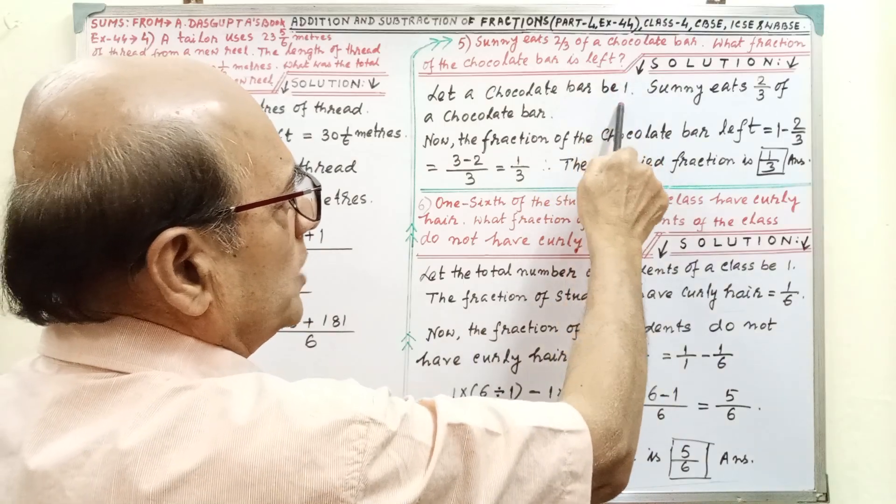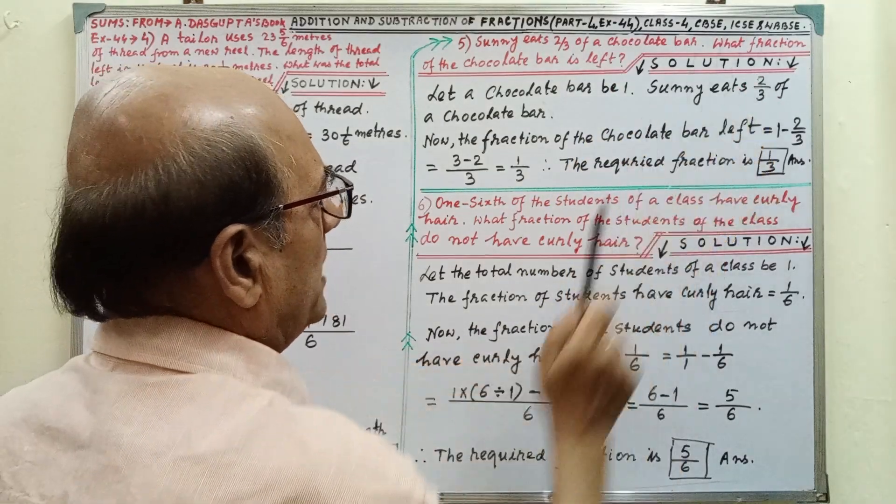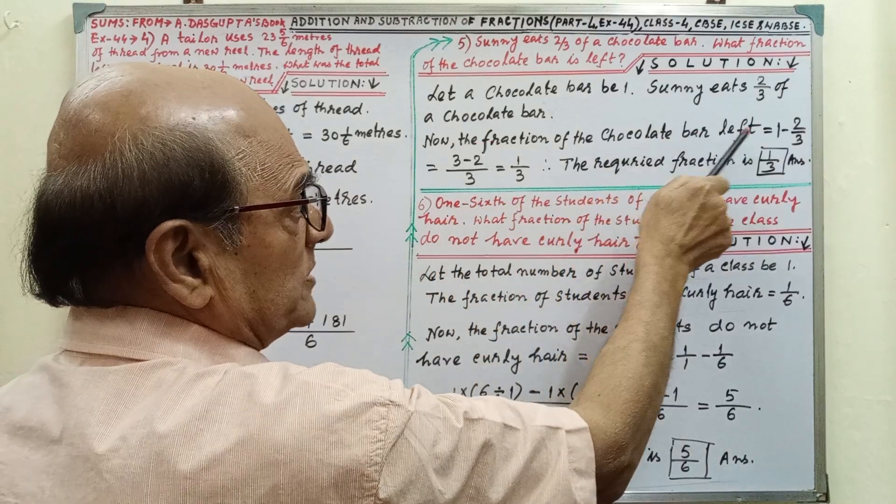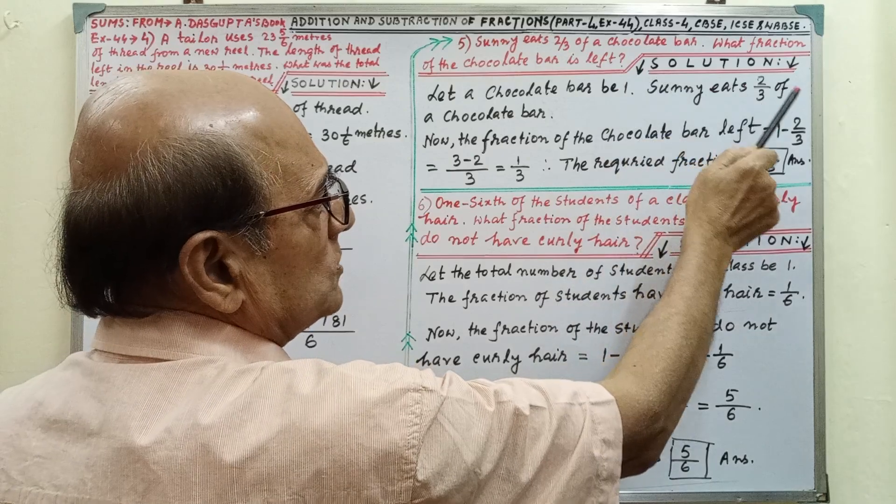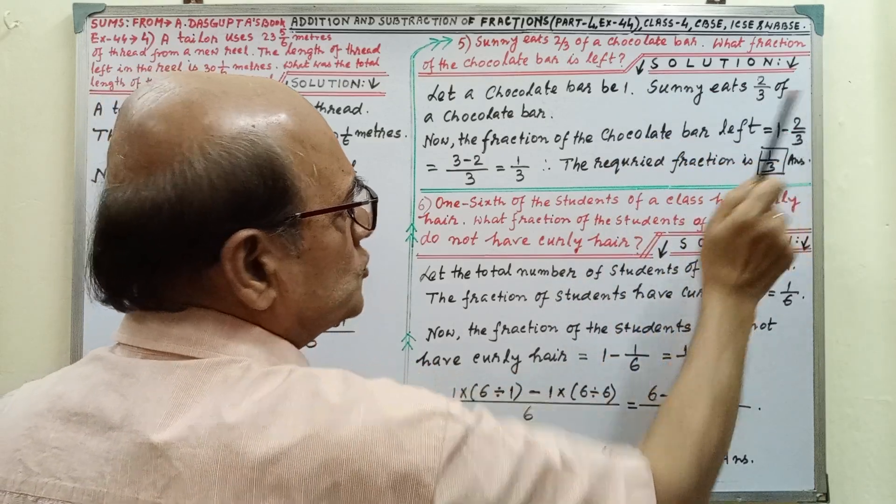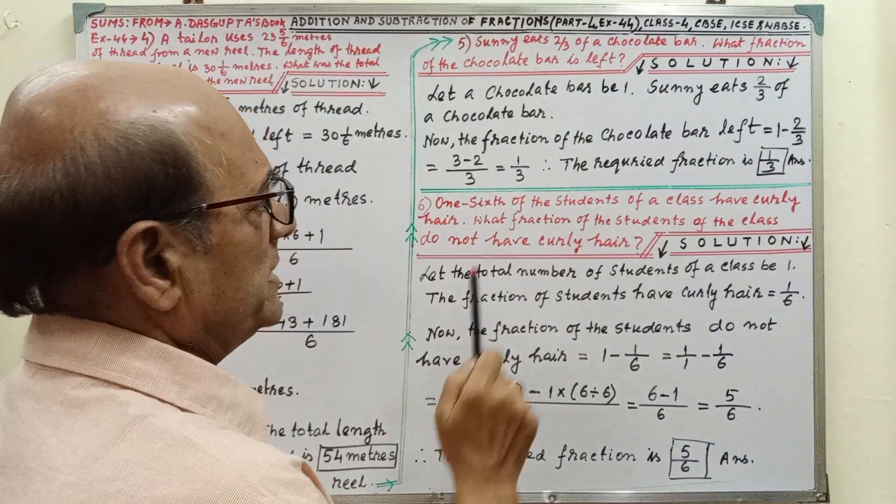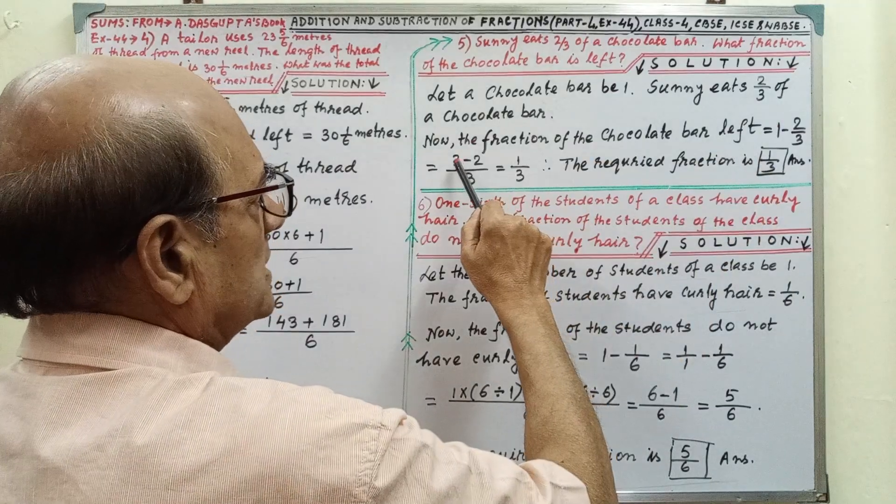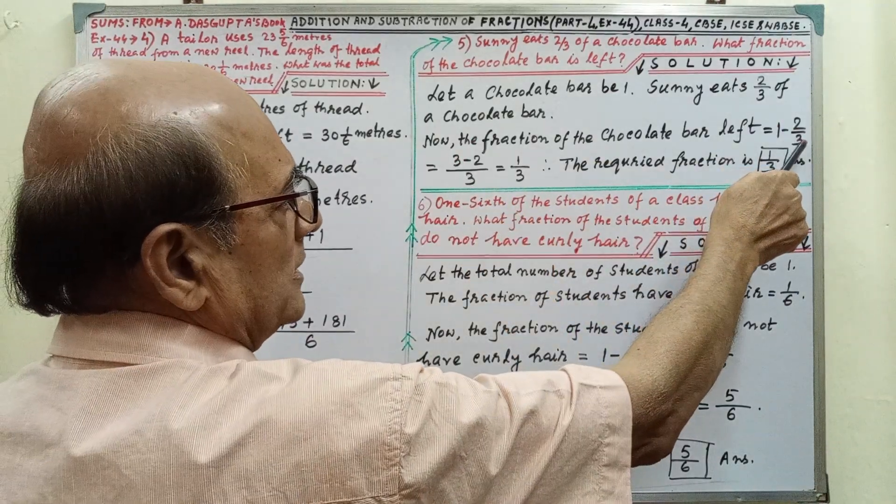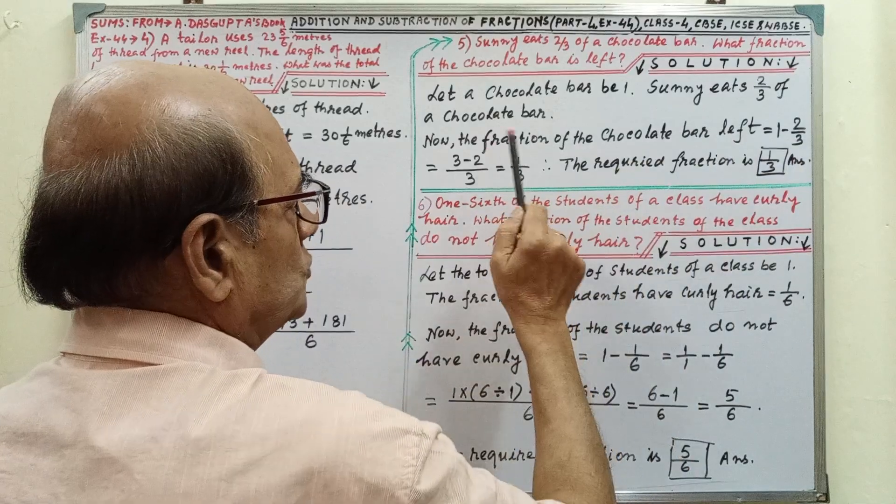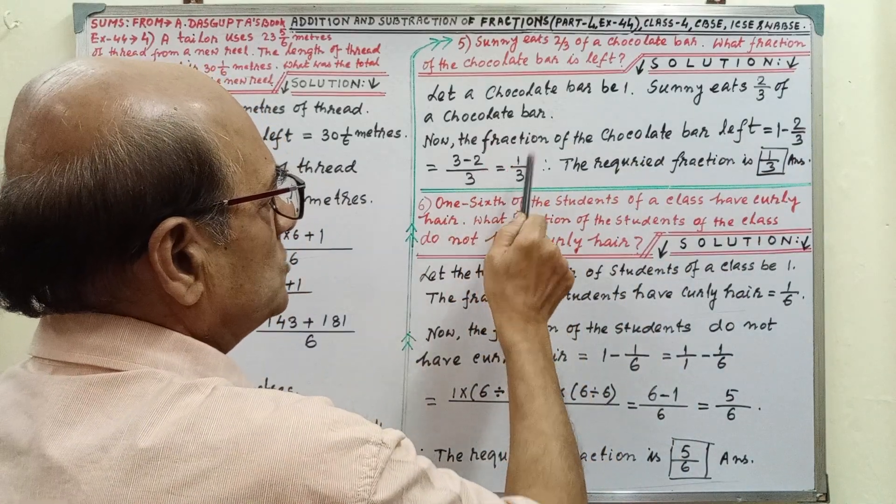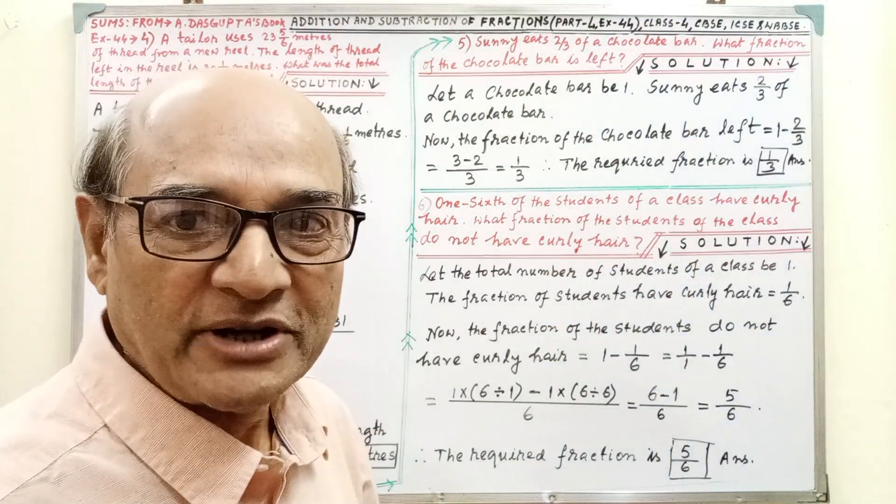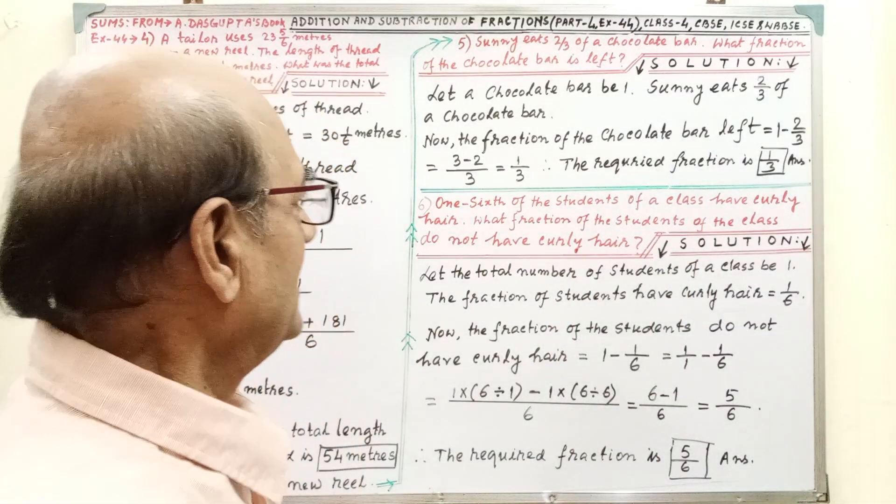Sunny eats this part of the chocolate bar. Total was 1, and he eats this part. So, the fraction of the chocolate bar left: total minus what he has taken, that is minus 2 by 3. Here directly it is done. LCM 3 and 3 into 1 that is 3. And 3 divided by 3 is 1, 1 into 2 that is 2. By subtraction, we are getting 1 by 3. The required fraction is 1 by 3. Shortcut method also you may follow if you understand.